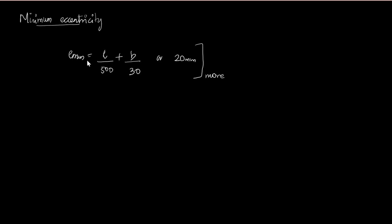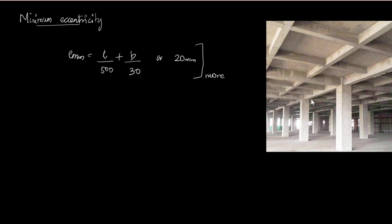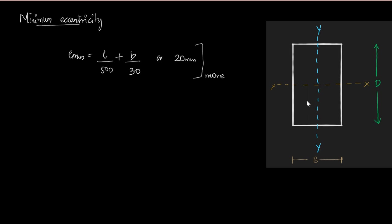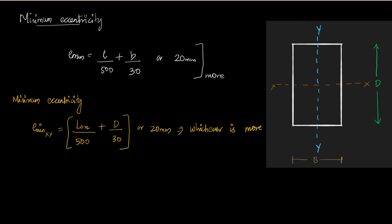Minimum eccentricity per clause 25.4: e_min = L₀/500 + lateral dimension/30, or 20 mm, whichever is more. In the general case, if the beams along the x-axis and y-axis have the same depth, the formula is straightforward. For a rectangular column b×d: along the x-axis the lateral dimension is d, and along the y-axis the lateral dimension is b.